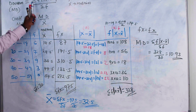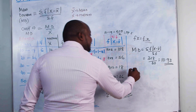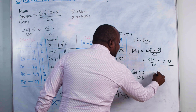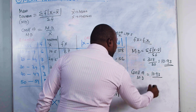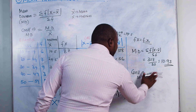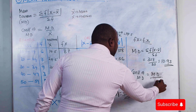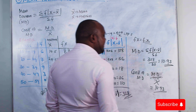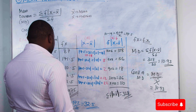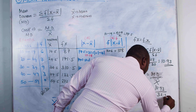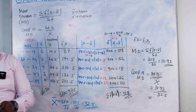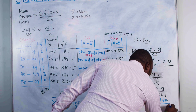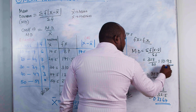The formula is clear. The coefficient of mean deviation is our mean deviation divided by our mean: 10.93 / 32.5 = 0.3364. So that is our coefficient of mean deviation.